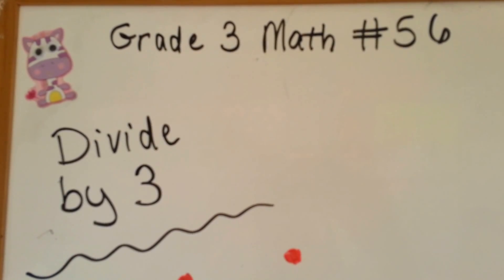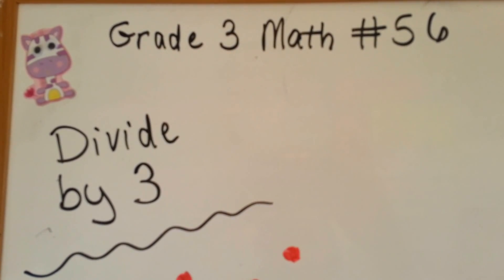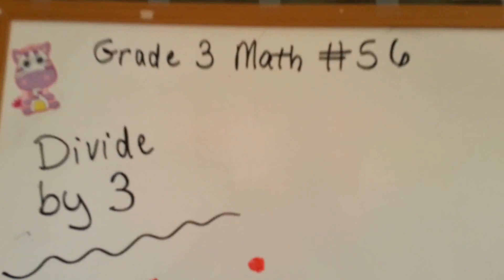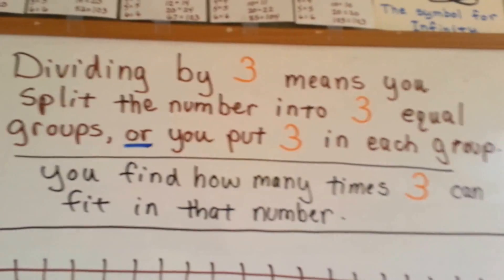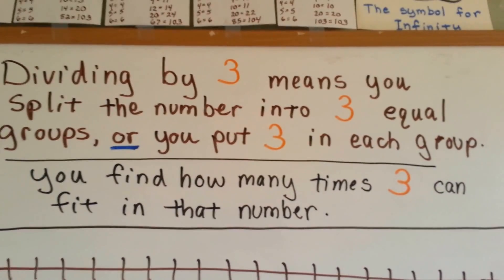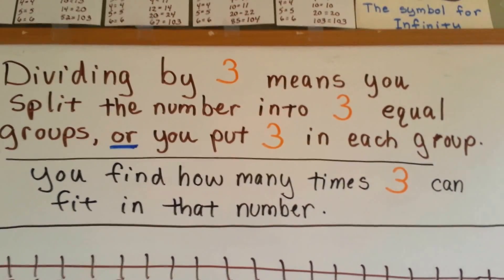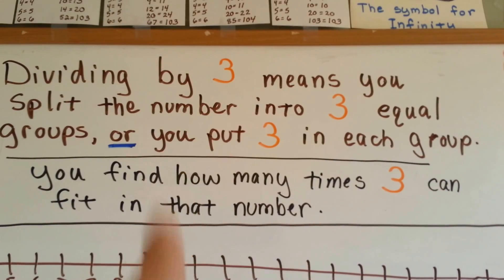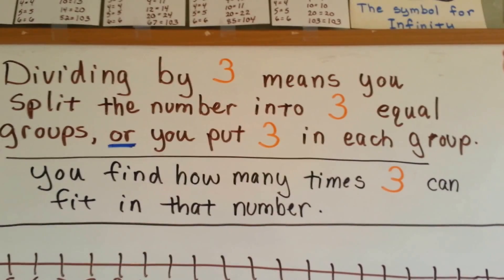Grade 3 math, number 56. Divide by 3. Let's look at my ever-changing rules here. I've removed the other numbers we were doing before — the fives and the tens — and I put 3 in place.